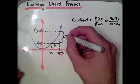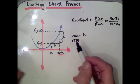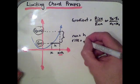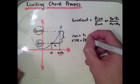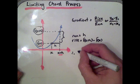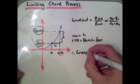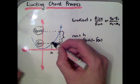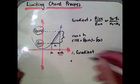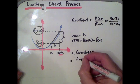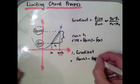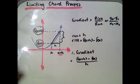Our rise would be f of x plus h subtract f of x. So let's write that out: f of x plus h minus f of x. We can now start to develop a formula for the limiting chord process. If we take f of x plus h minus f of x — which is our rise — and divide it by h — our run — we get a formula that calculates the gradient between two points.